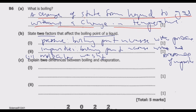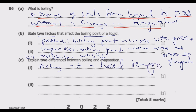So basically those are the four factors: one pressure, two impurities, three molecular weight, four intermolecular forces. Now we look at question C: explain two differences between boiling and evaporation. The first one is that boiling occurs at a fixed temperature.